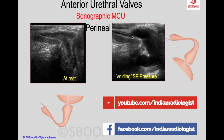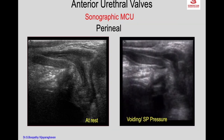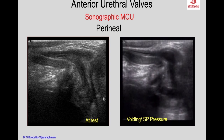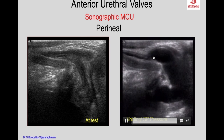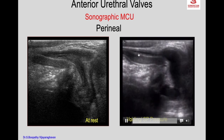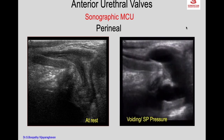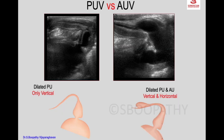The micturating cystogram confirms anterior urethral valves. The diagnosis is made by sonographic micturating cystourethrogram — a video shows the normal urethra at rest, and with voiding the dilated posterior and anterior urethra up to the diverticulum. The difference from posterior urethral valves: in posterior urethral valves, only the vertical posterior urethra is dilated and dilatation stops at the junction.